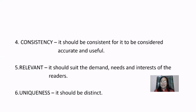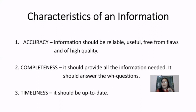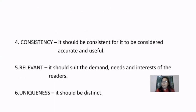And the last one is uniqueness — it should be distinct. So those are the six characteristics we need to consider in dealing with different information in order to find out if that particular information is good or reliable or not. Again, we have: accuracy, completeness, timeliness, consistency, relevant, and uniqueness.